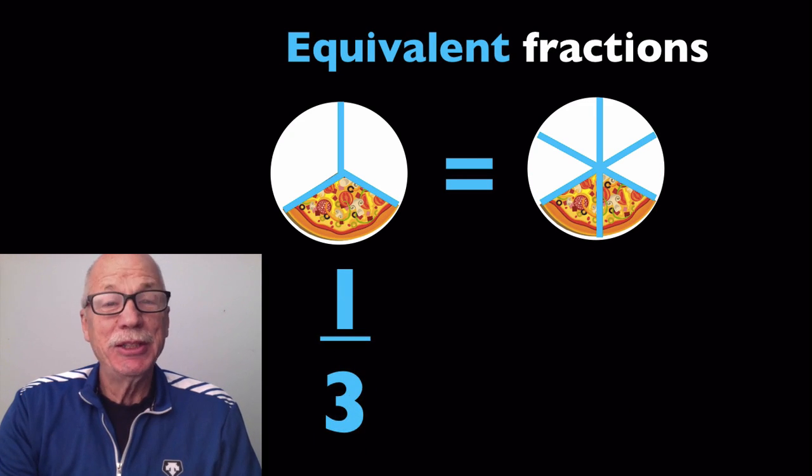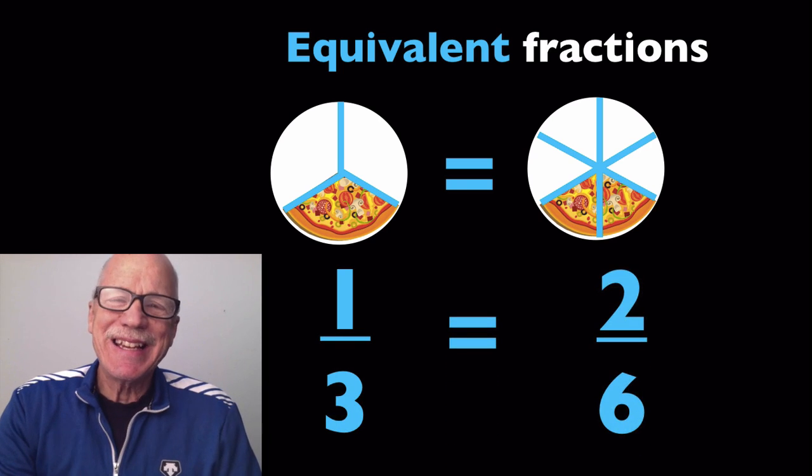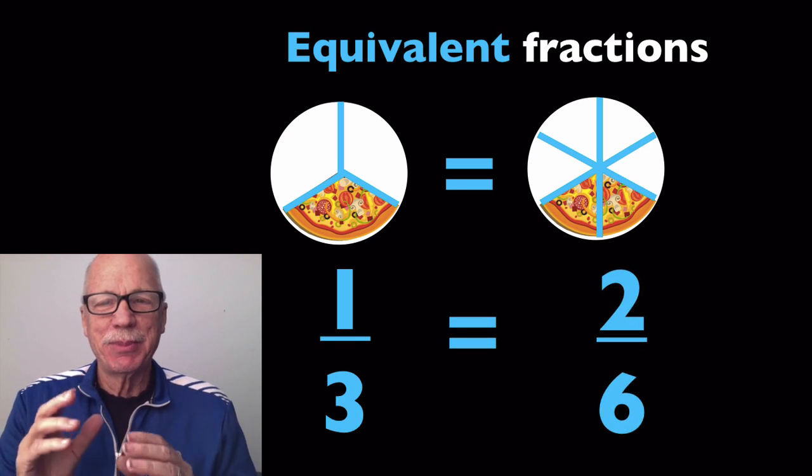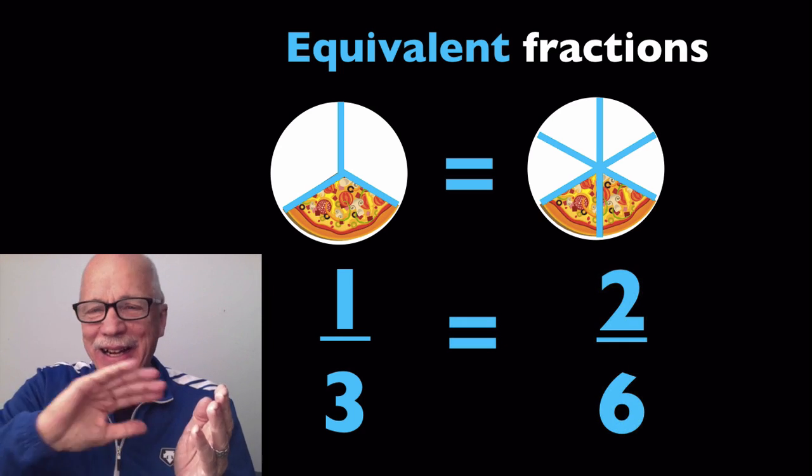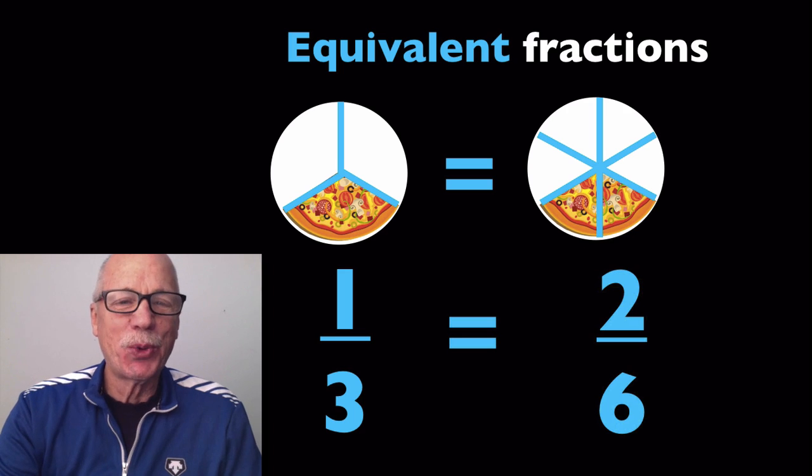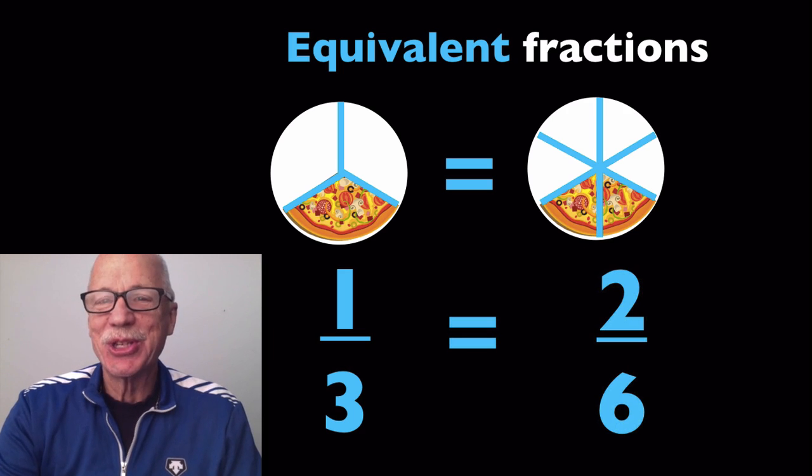There is one-third of a pizza, yum-yum, and there's two-sixths of a pizza. But when you look at them, you see, it's the same size, just cut up differently. Equivalent fractions look different, secretly the same.